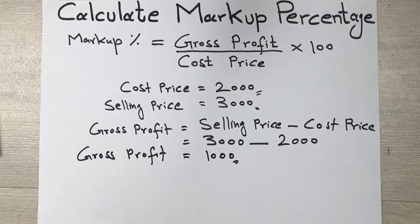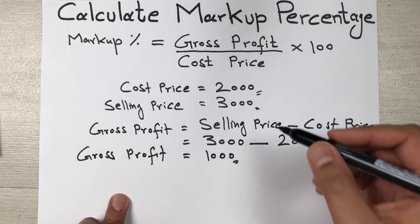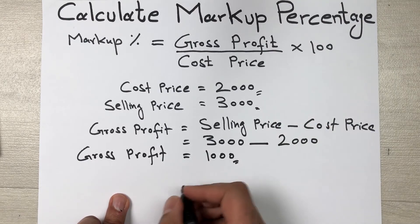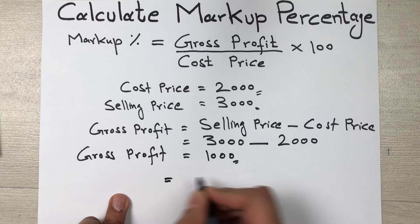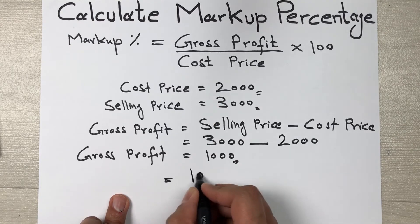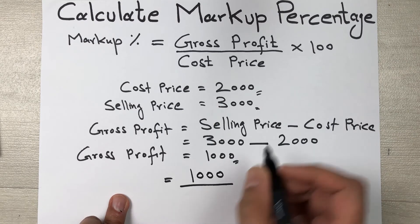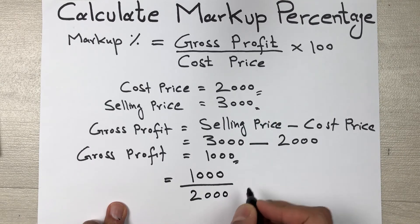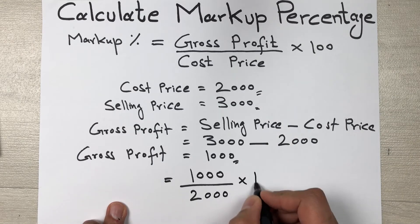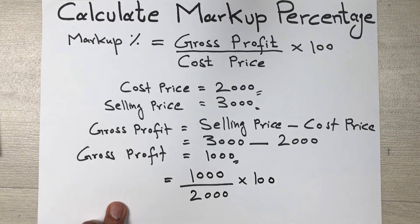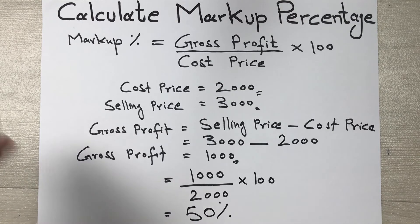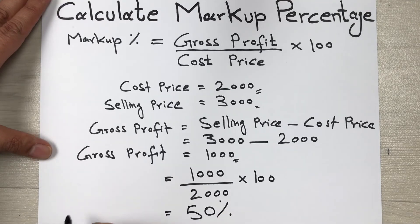Now we have our gross profit and our cost price, so we put these values into the formula. Gross profit is 1000, divided by cost price which is 2000, multiplied by 100. When we do this calculation our answer will be 50%, and this is our markup percentage.